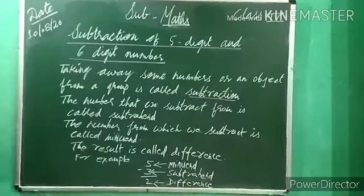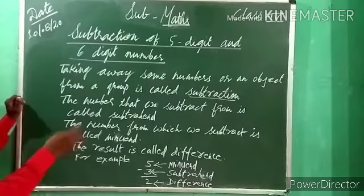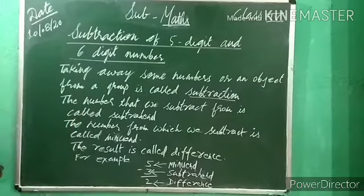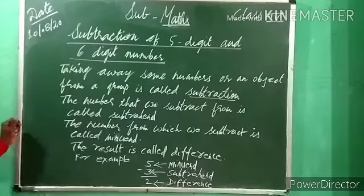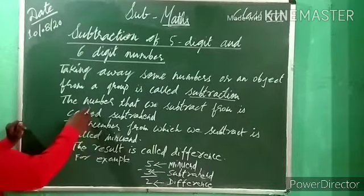Understood — definition of subtraction: taking away. Koi cheej nikhalna, koi number nikhalna — that is called subtraction. Now, the number that we subtract from is called the minuend.